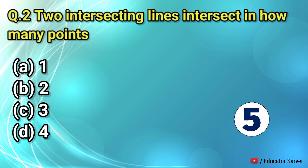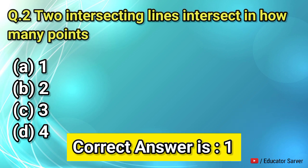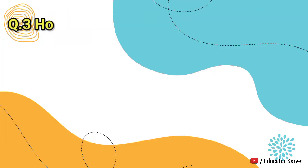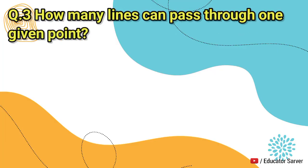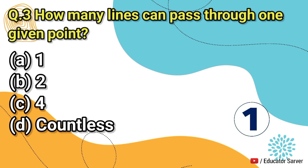Next question: two lines intersect in how many points? Options are one, two, three, and four. The right answer is one. Question number three: how many lines can pass through one given point? Options are one, two, four, and countless. The right answer is countless.